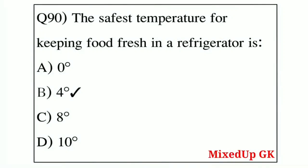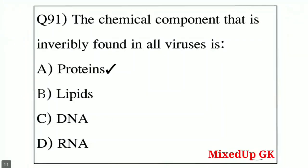Question number 90: the safest temperature for keeping food fresh in a refrigerator is — Option A: zero degrees, Option B: 4 degrees, Option C: 8 degrees, Option D: 10 degrees. The correct answer is 4 degrees — the safest temperature for keeping food fresh in a refrigerator.